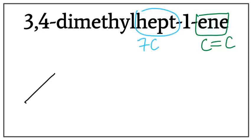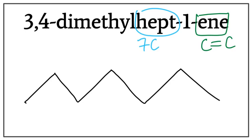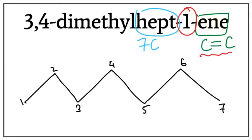Let's draw the seven-carbon chain. A trick to draw this is that you always count till one less than the number of carbons you want to draw: 1, 2, 3, 4, 5, 6. This 1 tells us the location of the double bond, which is between the first and the second carbon.